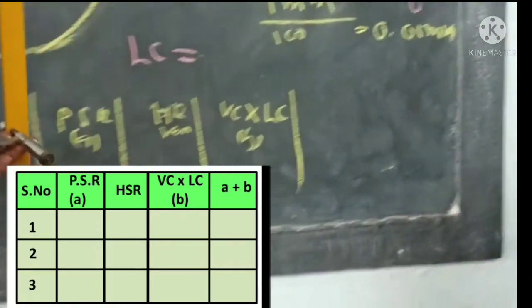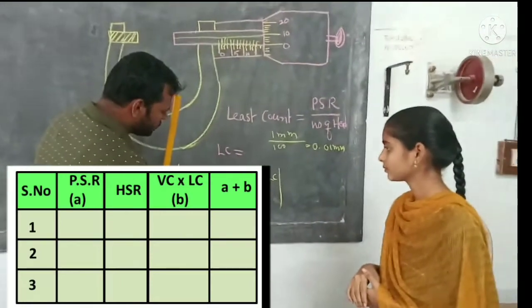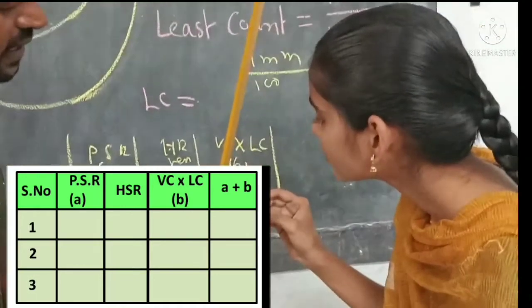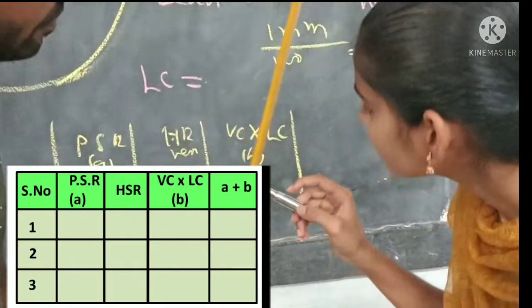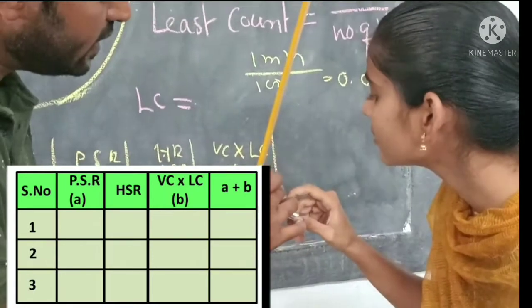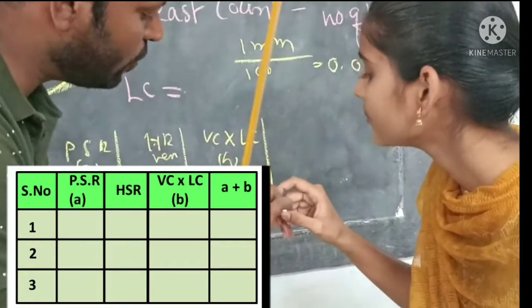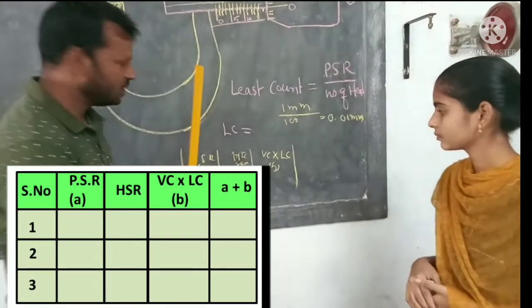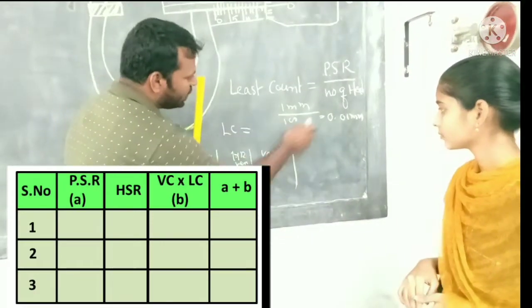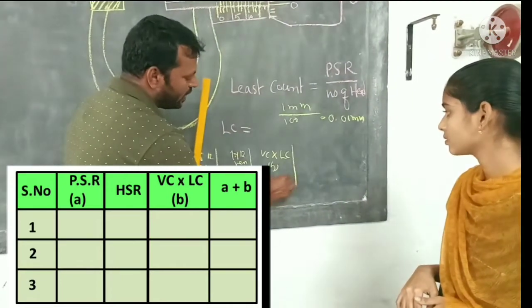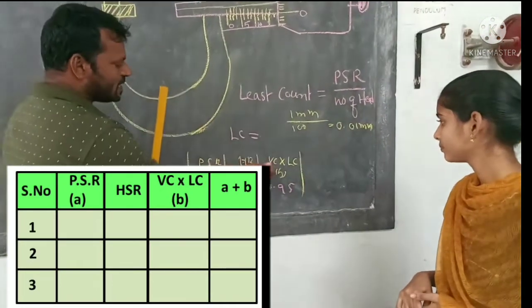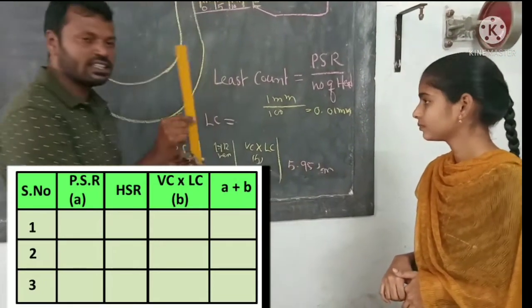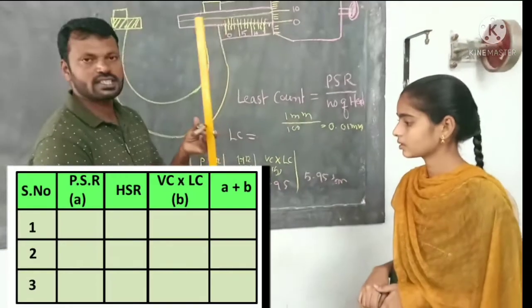For example, if the main scale reads 5 mm, and the head scale center line reads 95, then the head scale reading is 95. The total reading is 5 mm plus 95 multiplied by 0.01 mm, giving you the thickness of this meter scale.